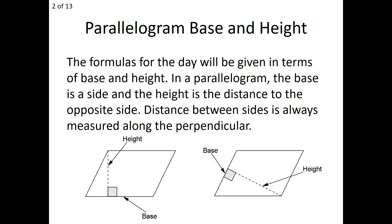That's something we proved back in Chapter 5. So really, no matter which side you pick to be the base, you will always find the height to be that perpendicular between the two sides — the base you've picked and the opposite side. In the first diagram, I've chosen the base as the bottom side. The height, as labeled, is the perpendicular from the opposite side to the base, and that height is the same no matter where you drop it from.